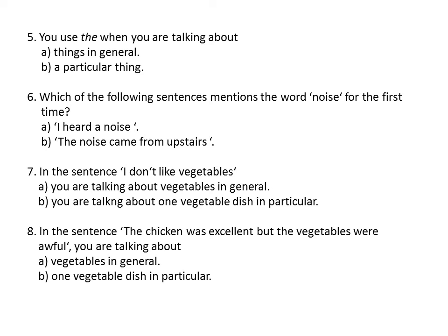And the last question for today. In the sentence 'the chicken was excellent, but the vegetables were awful' — you are talking about A: vegetables in general, or B: one vegetable dish in particular. In this case, we are talking about one vegetable dish in particular, and B is the correct option.